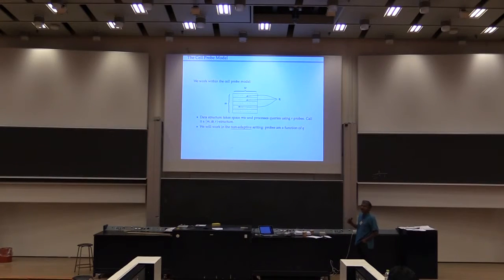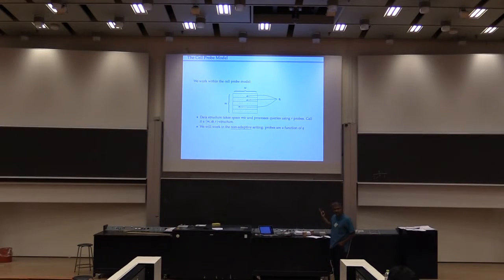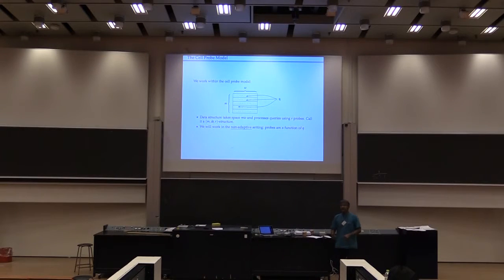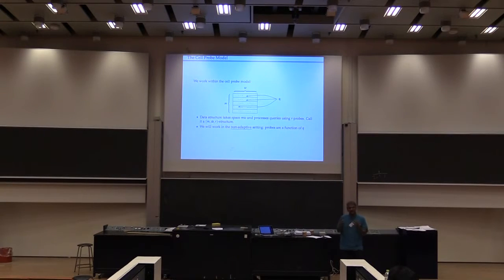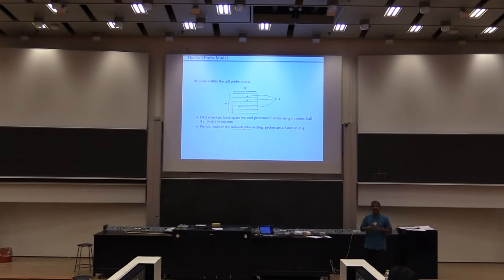We work in a model that's reasonably well studied in data structures called the cell probe model. The idea is that I build a data structure and make queries into the structure. I express my bounds in terms of how many lookups I need to make. I don't care about what other computation I need — it's a lower bound, so my actual query time is going to be worse. This is used very successfully for all kinds of lower bounds for locality-sensitive hashing and other barriers.